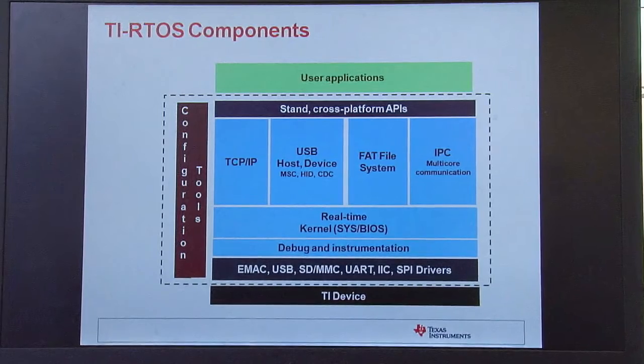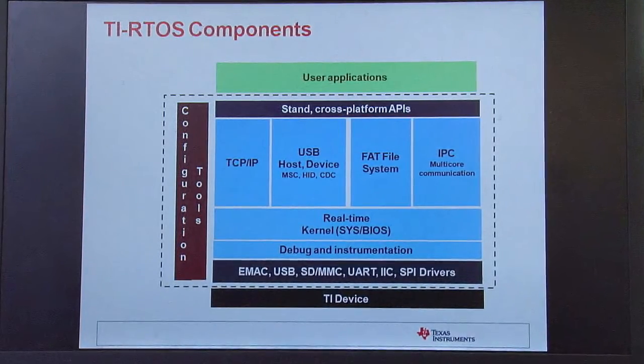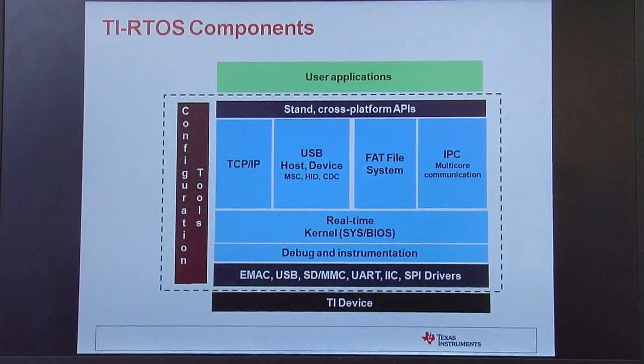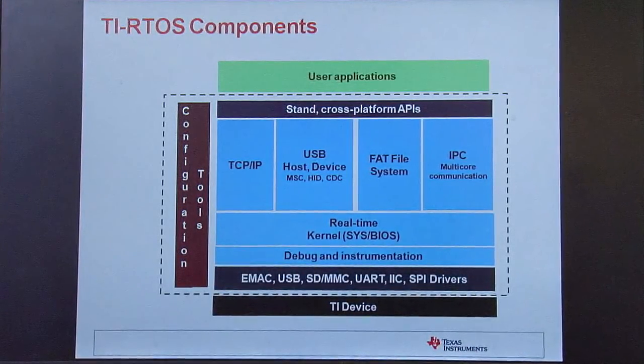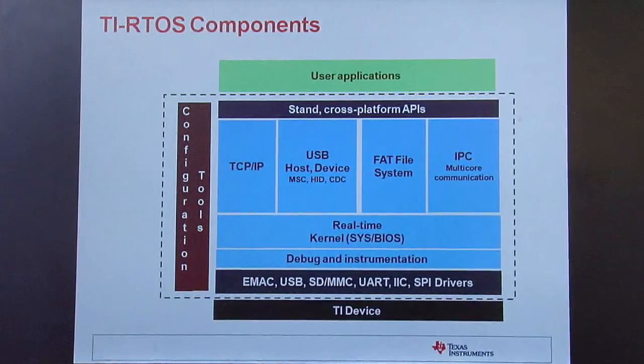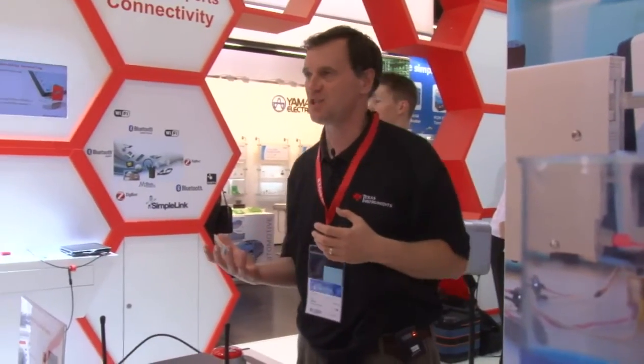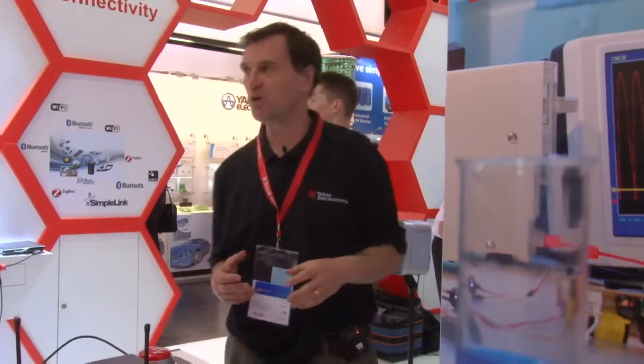To summarize what we provide in the OS at the component level: we have two core layers — the real-time kernel, which is our SYS/BIOS real-time kernel, and underneath that we have a debug and instrumentation layer which you can enable to see all kinds of logging data on the OS and the drivers. Above the kernel we have four pieces of middleware. We have an IPv4 and IPv6 compliant TCP/IP stack which includes common network applications such as HTTP, DHCP, and DNS.